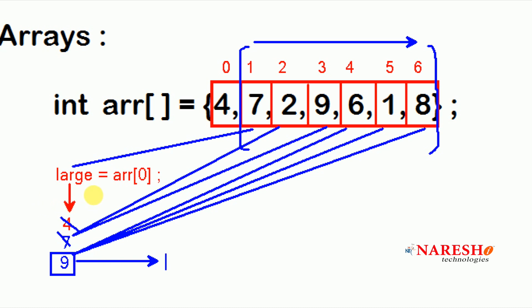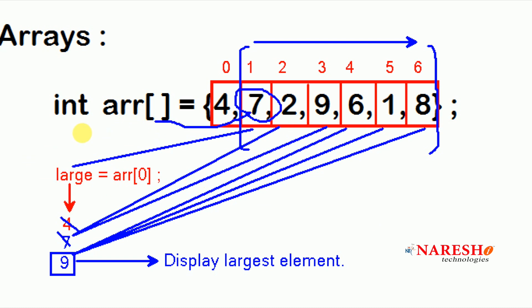We need to display the largest element using the `large` variable. First declare the array variable and store the same set of elements. The task is to find the largest element in that array. Follow these instructions: write the code using one loop and inside it one condition to check whether the index element is greater than `large` using an if block. Please write the code and comment your code. Thank you.